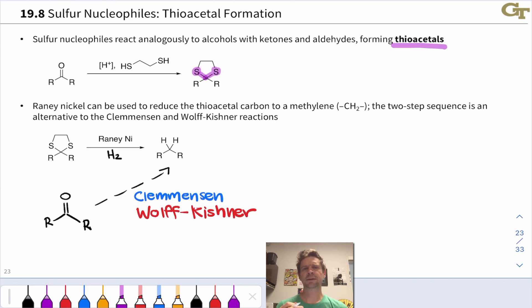Thioacetals can be used as part of a synthetic strategy to reduce a carbonyl group to a CH2, which is complementary to the Clemmensen and Wolff-Kishner reductions, which you typically see in an aromatic substitutions context. We've previously seen that you can reduce an aryl ketone down to an alkyl group, reducing the carbonyl group down to a CH2 using Clemmensen or Wolff-Kishner conditions. A thioacetal provides another means to do this.